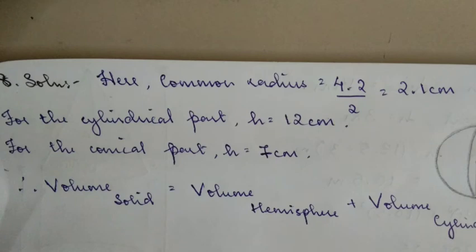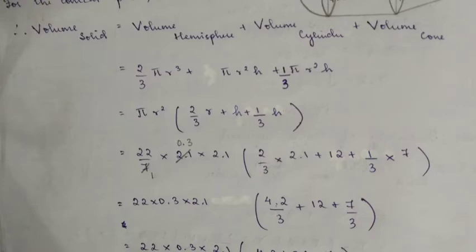The volume of the solid equals the volume of the hemisphere plus the volume of the cylinder plus the volume of the cone. Now we substitute the formula for each shape.